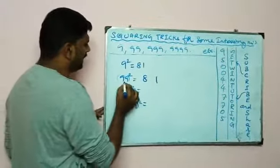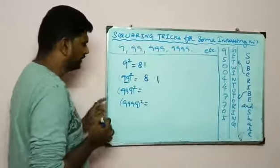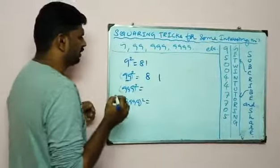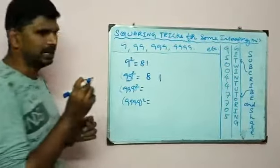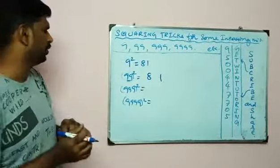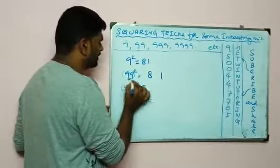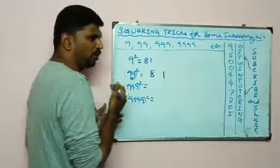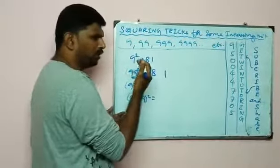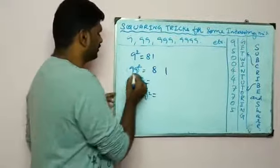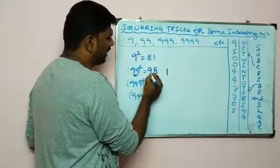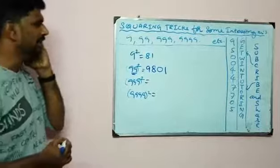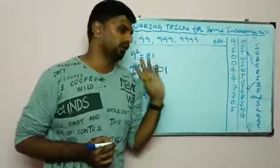Now, 99 is a 2-digit number: 9, 9. You have to take one number less than the count. If you have two numbers, one count will be one less. So, 9. One 9 equals 0. So, 99 squared is 9801.